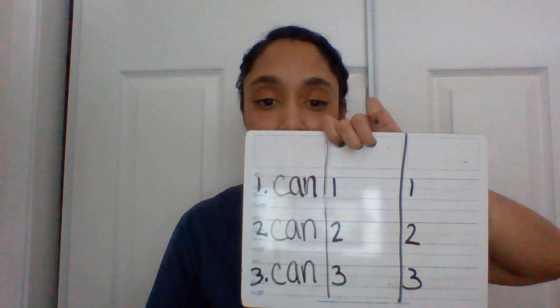I'm going to give you your first sight word. The first sight word is "can." Can we write the word "can" three times? I'll write it with you. Give me a thumbs up when you're ready. Okay, this is how I write the word "can." Great job.